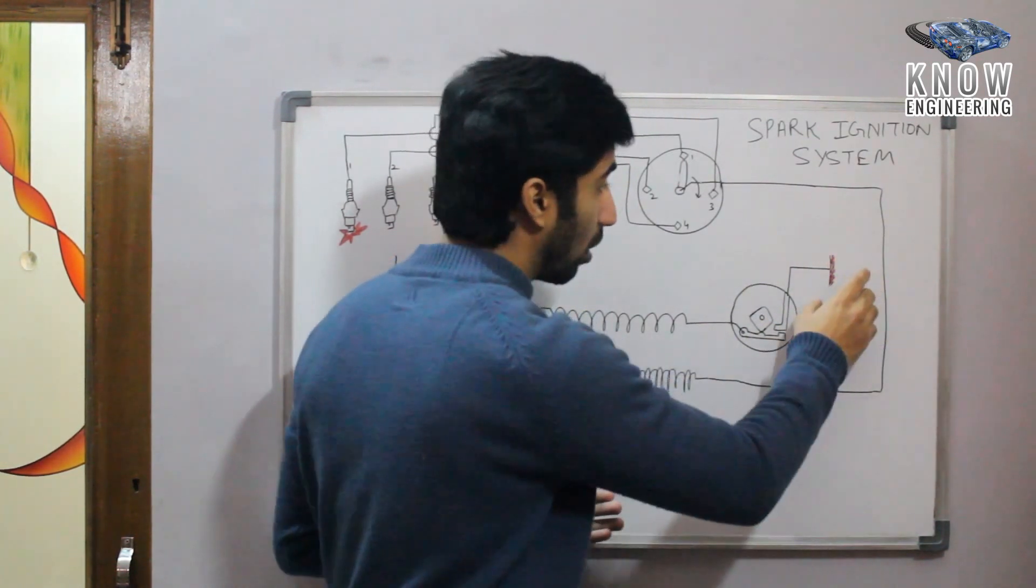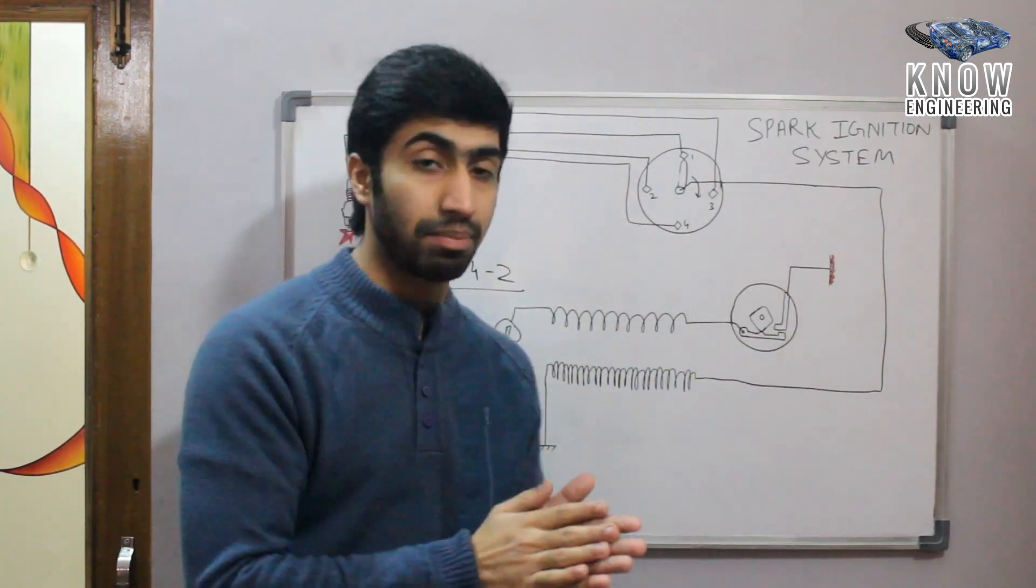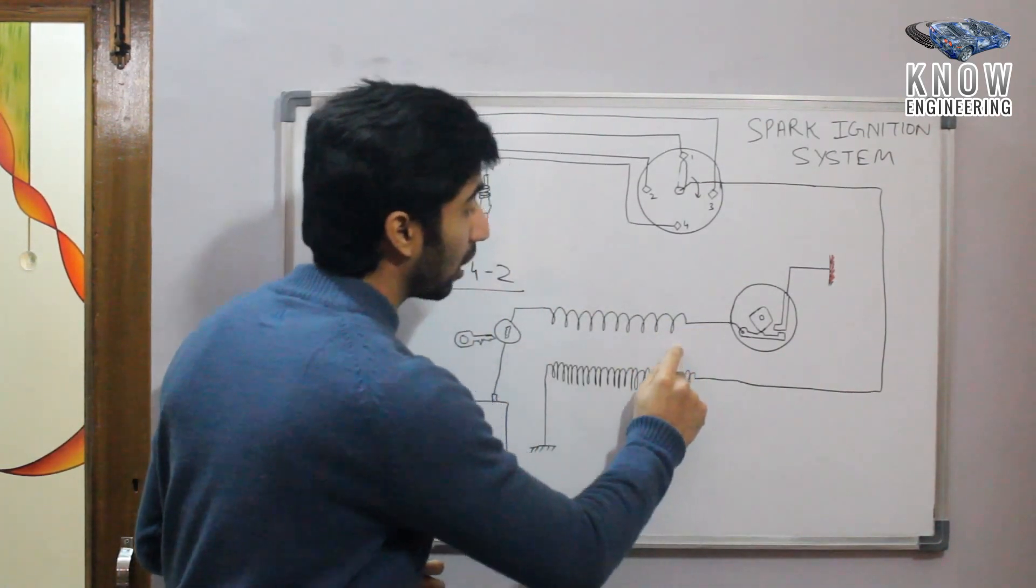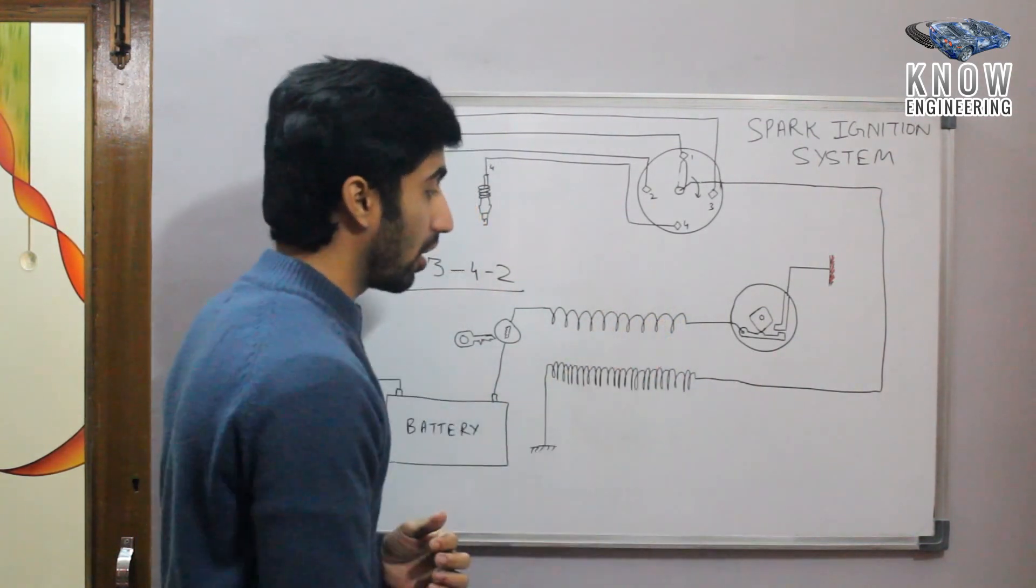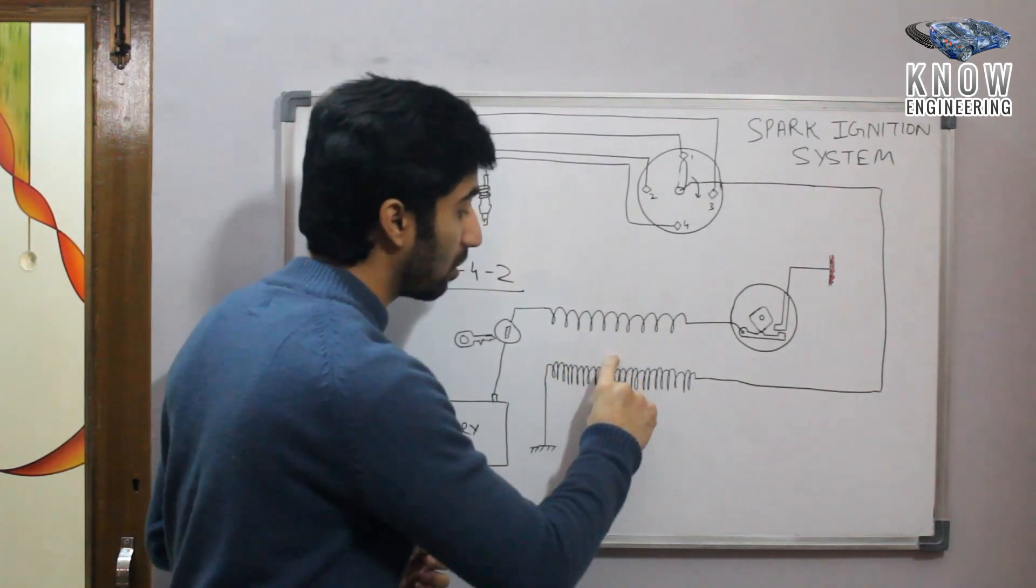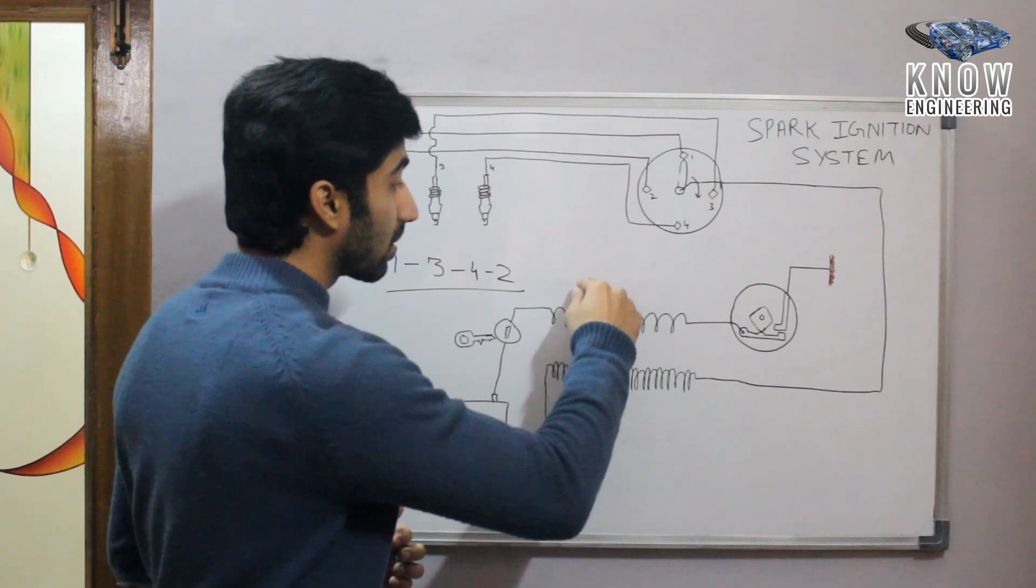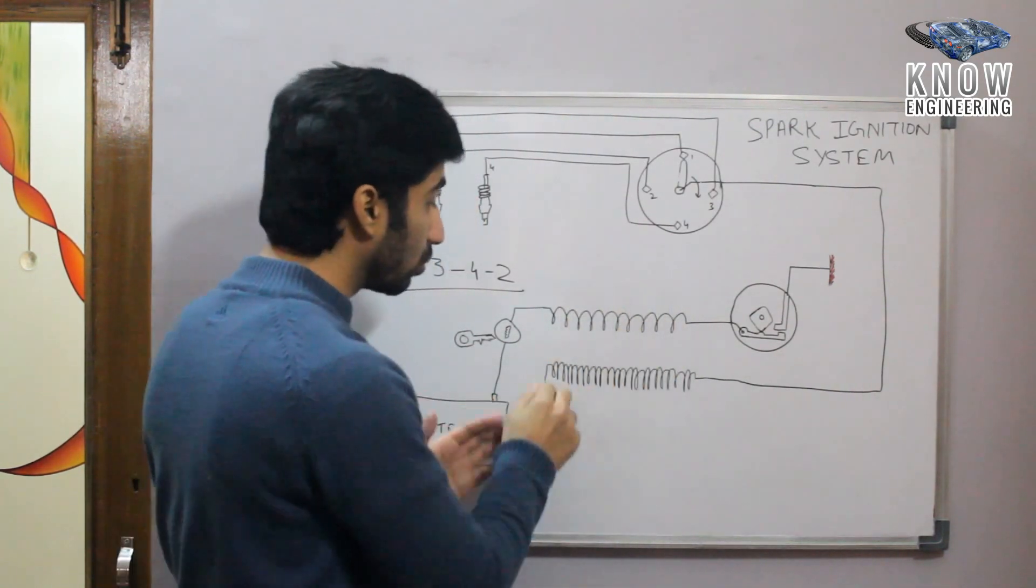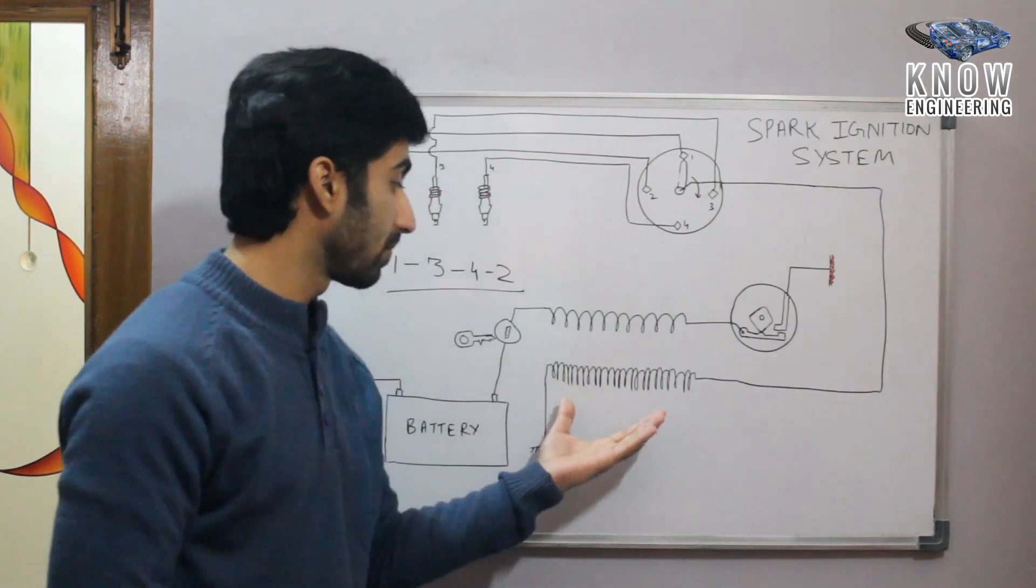The circuit is completed so the current starts flowing through the primary coil. The primary coil has less number of turns and the secondary has more number of turns, so it converts the 12 volts of the battery to 12,000 volts in the secondary coil.